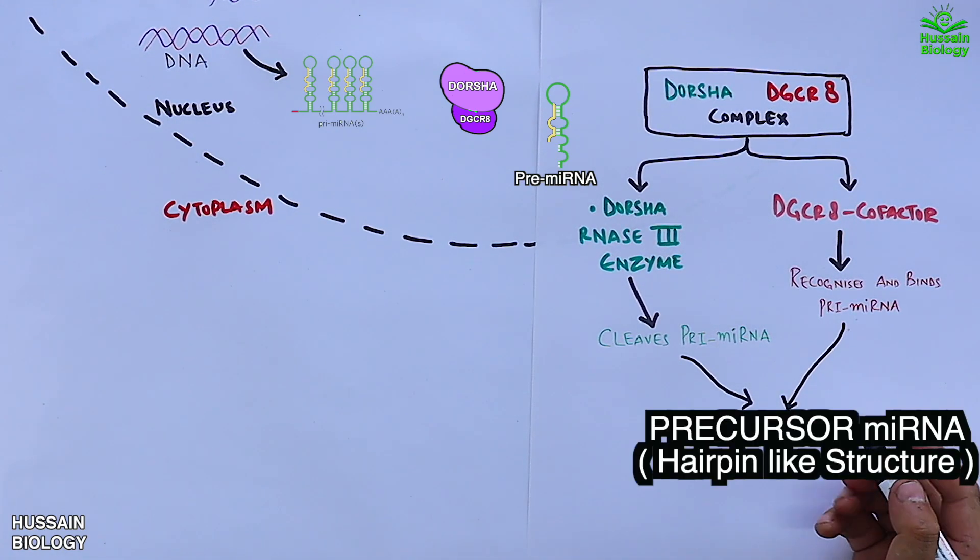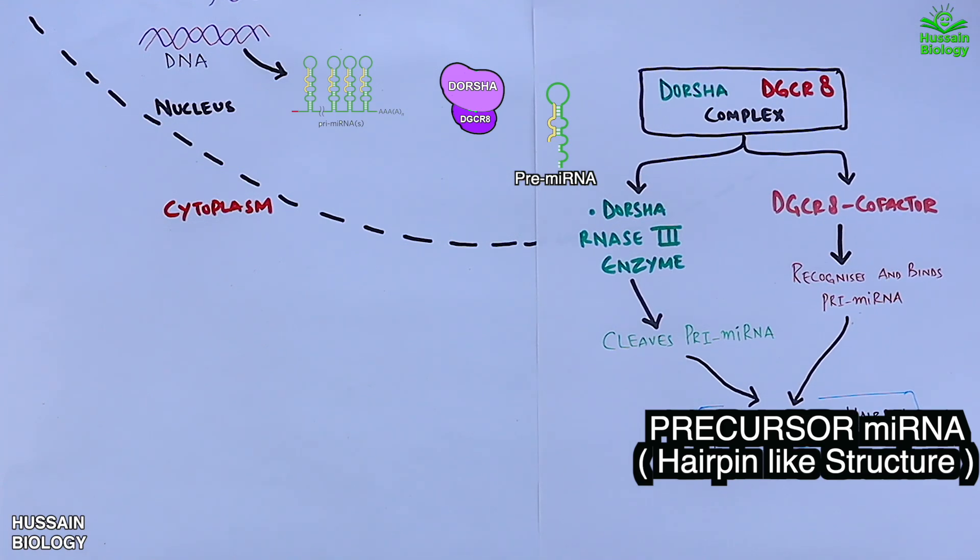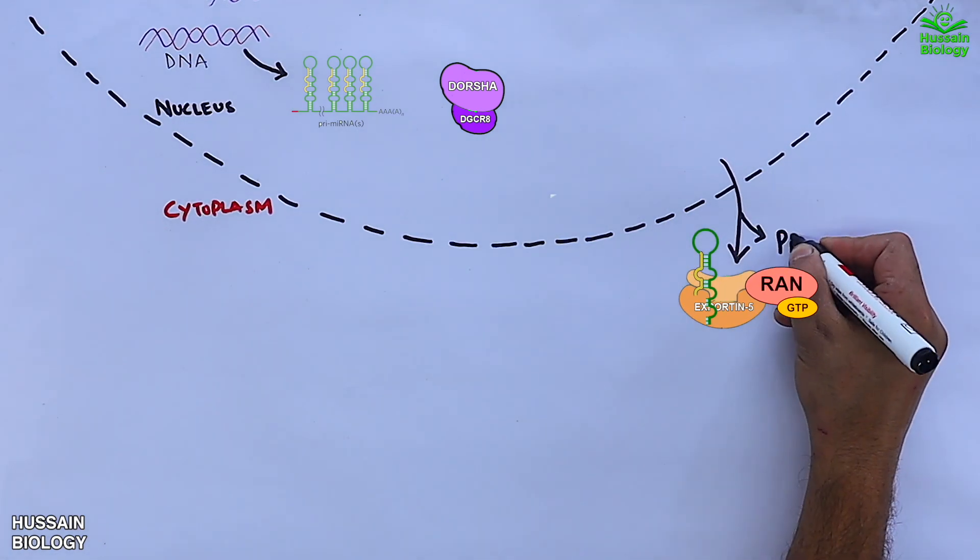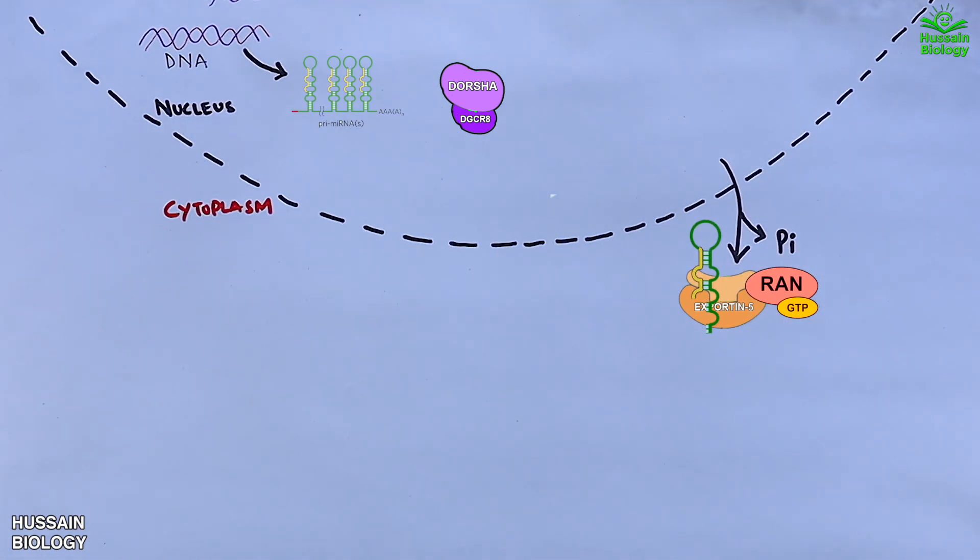From this event we get the precursor miRNA in a hairpin-like structure. Now getting back to the diagram, we see the precursor miRNA gets loaded to Exportin-5 protein. With the help of GTP, the precursor miRNA is then exported to the cytoplasm.